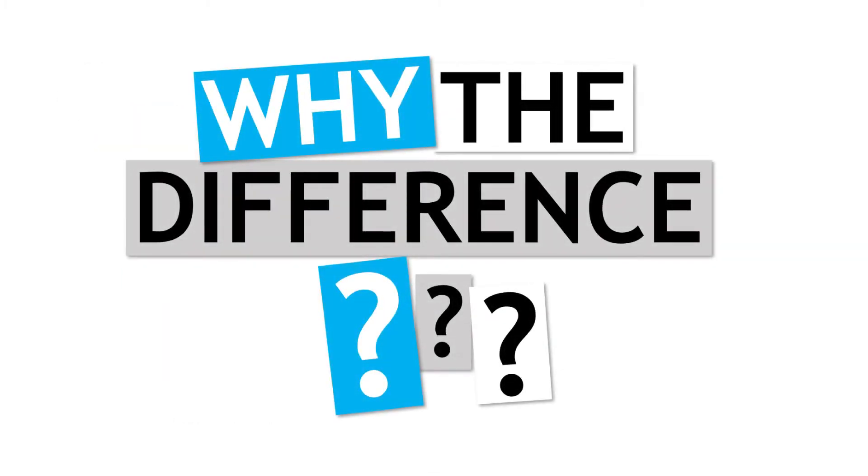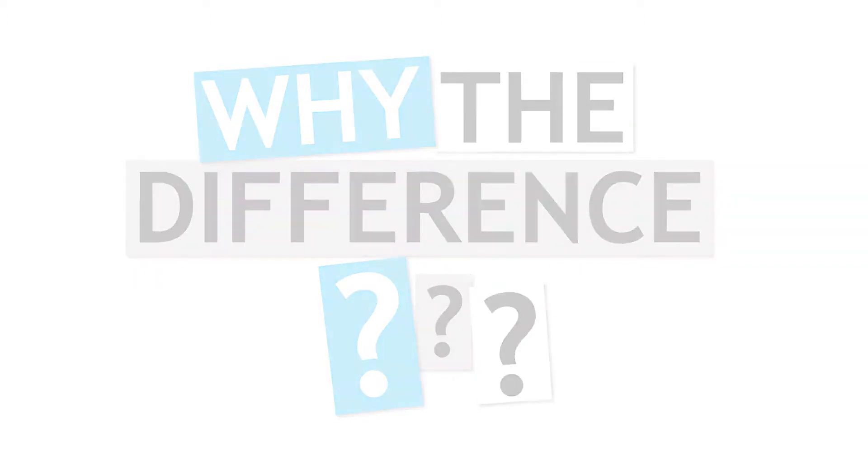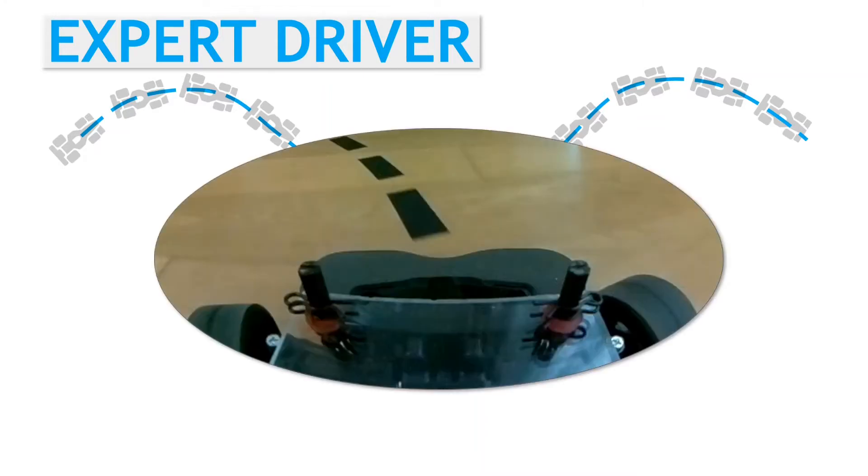So why the difference? Well, for the training data, the expert driver does the driving, which means they do a pretty good job of sticking closely to the track. The training data is almost exclusively images of driving on the correct driving line.